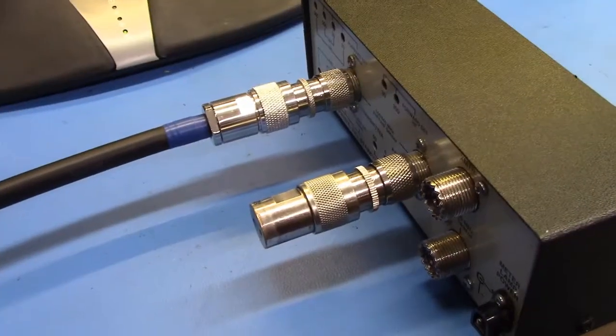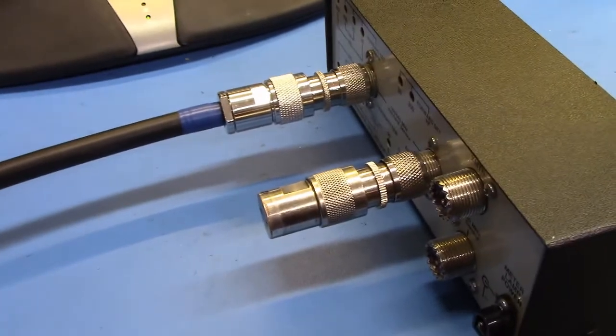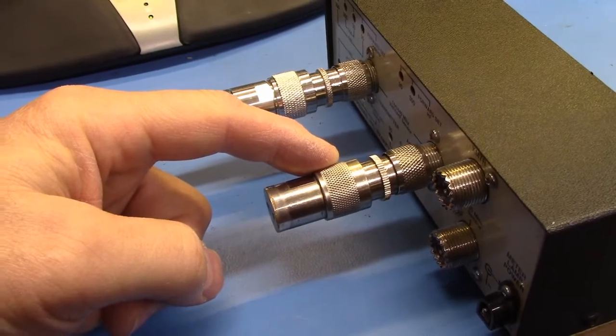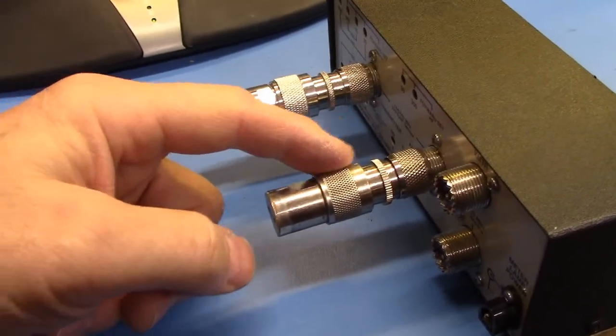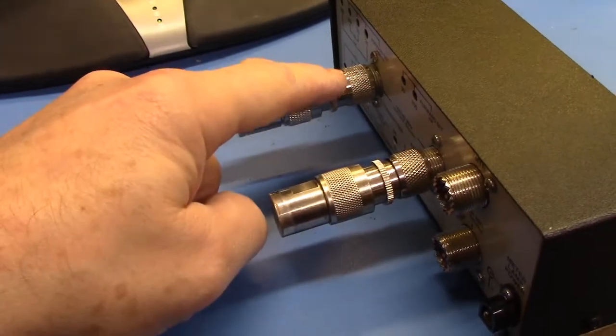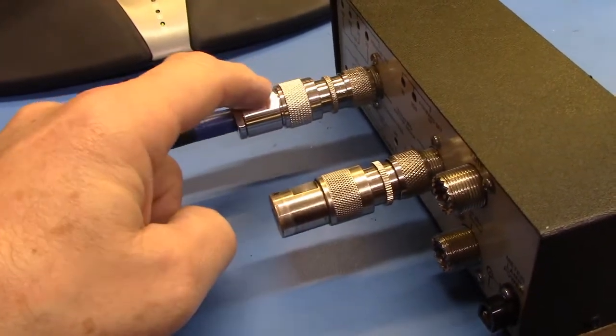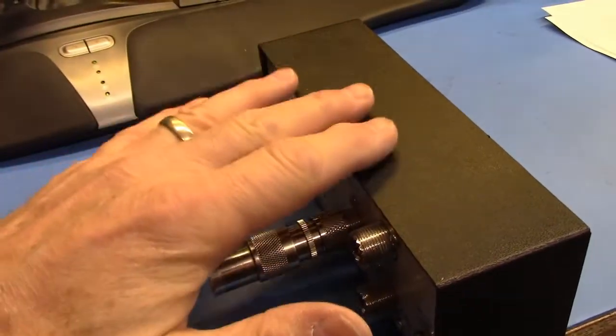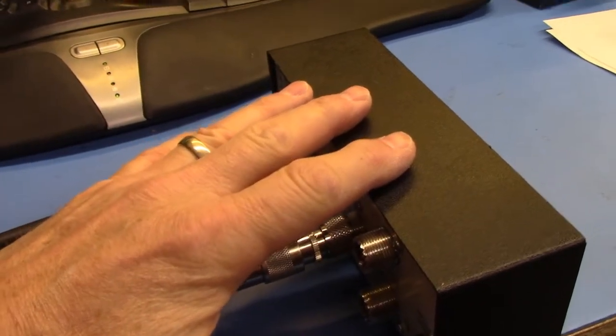You can see the setup here. We have the calibrated 50 ohm load right here on the antenna terminal of the SWR bridge, and we have the VNA connected up here, all calibrated right to the end of this connector, so we're just measuring the SWR bridge.